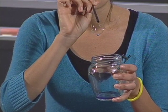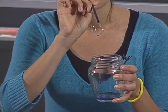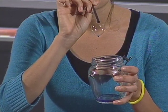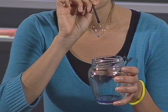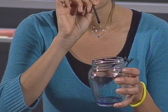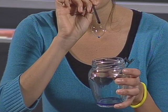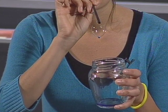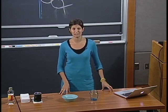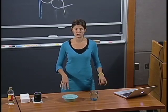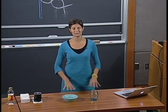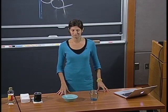The bubble remains transparent, and all the dye goes to the bottom. This happens because the molecules of food coloring are heavier than the molecules of soap and water, and so they just go to the bottom.